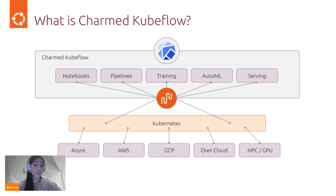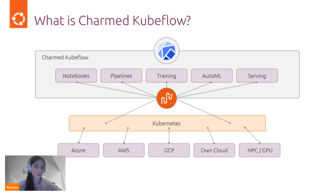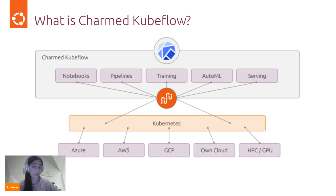Before we even get started, let's do a recap on what Charmed Kubeflow is. It is Canonical's official distribution of the upstream project that has been started by Google a few years ago. Charmed Kubeflow is an end-to-end open source MLOps platform designed to take projects to production and enable enterprises to scale their AI initiatives.